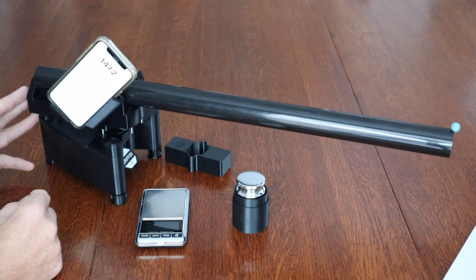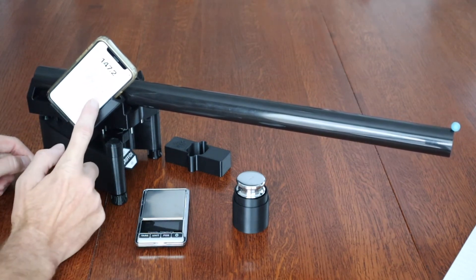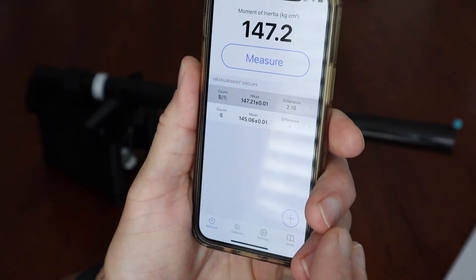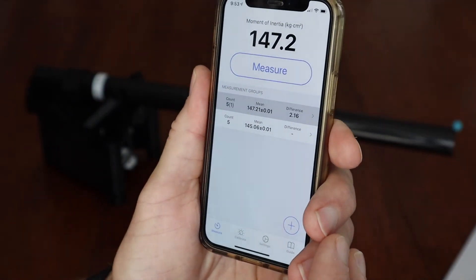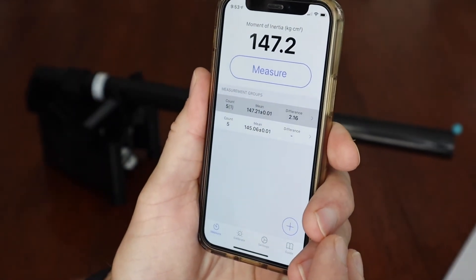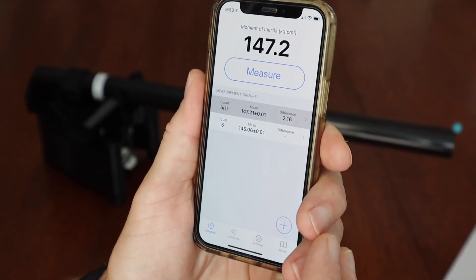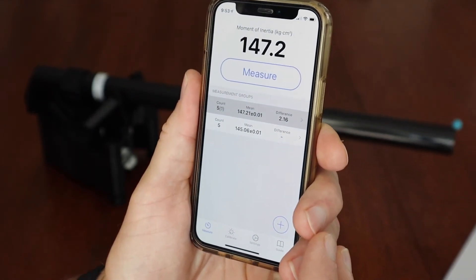Alright, so now I've got five measurements and it's showing a difference here. Let's focus hopefully there. Showing a difference of 2.16 versus a theoretical difference of 2.12 kgcm². So that's pretty close.